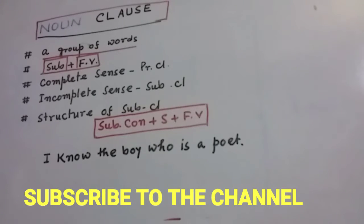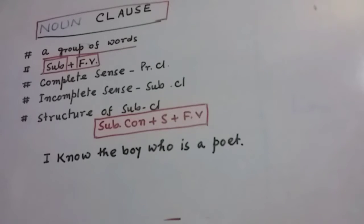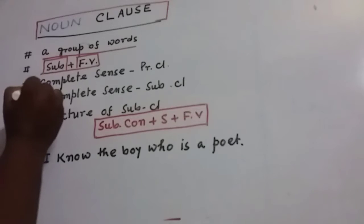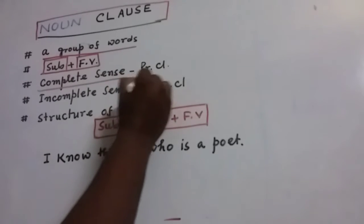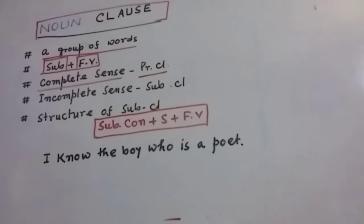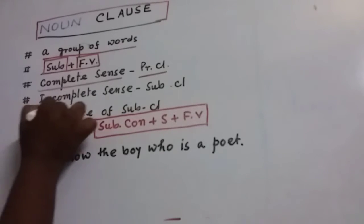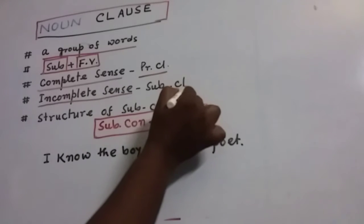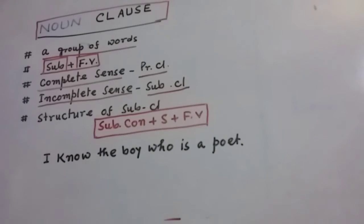If you want to learn something about phrases, there is another video and you can get the link in the i button. If the clause has a complete sense, it will be called a principal clause. And if that clause does not have complete sense — if it has incomplete sense — then it will be called a subordinate clause.